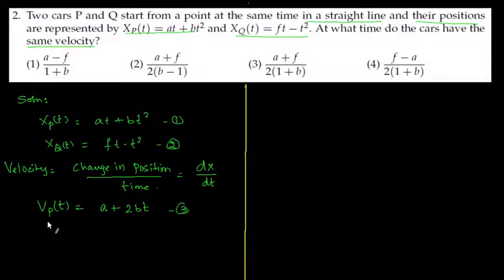Now let us differentiate the position equation for car Q that will give the velocity of Q with respect to time, that is f - 2t. So now we have got the equation for velocity of cars P and Q. Now we have to find out at what time do the cars have the same velocity.